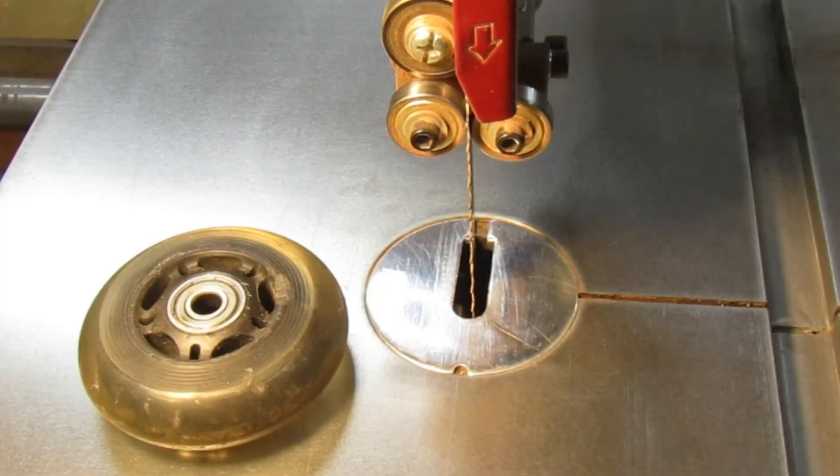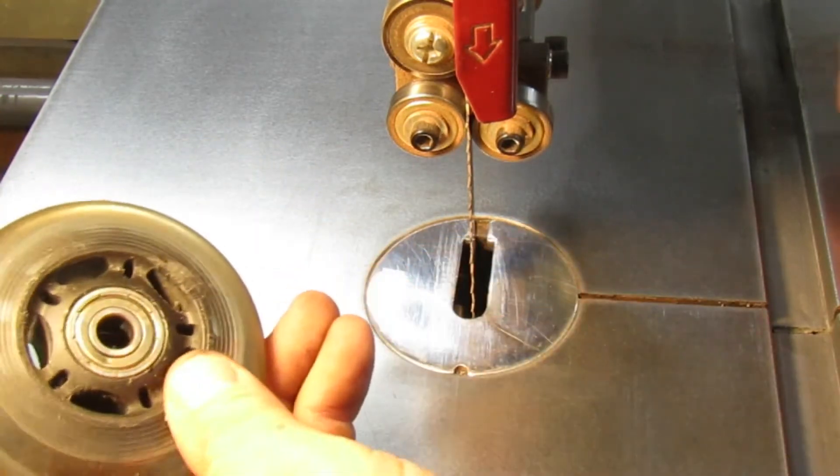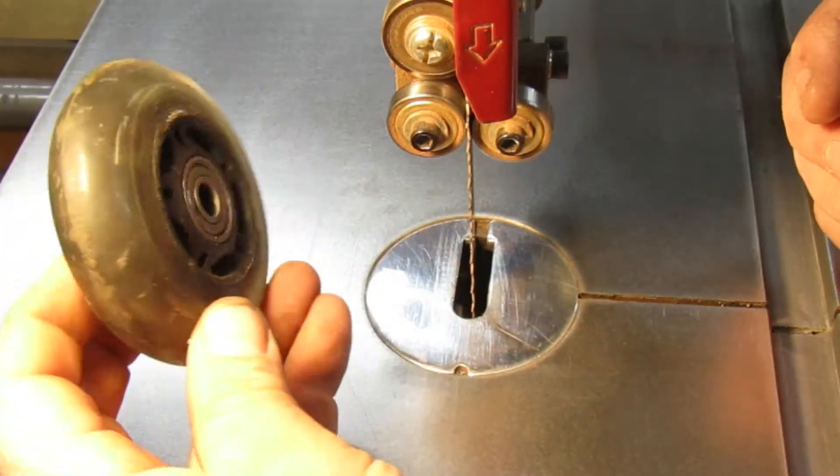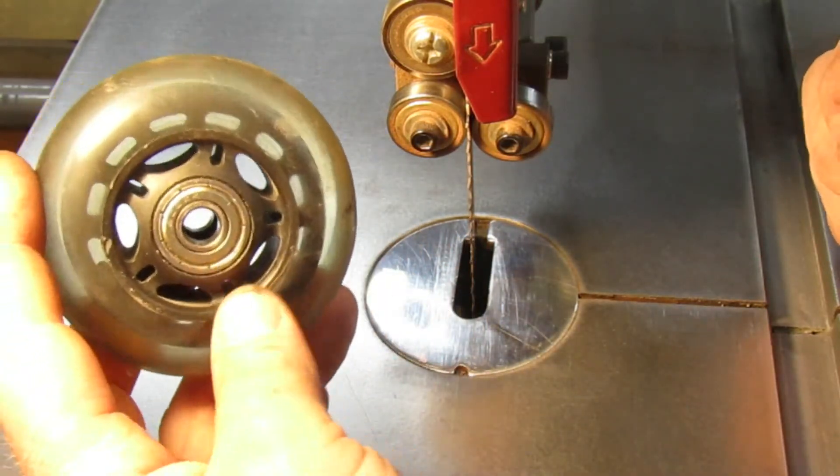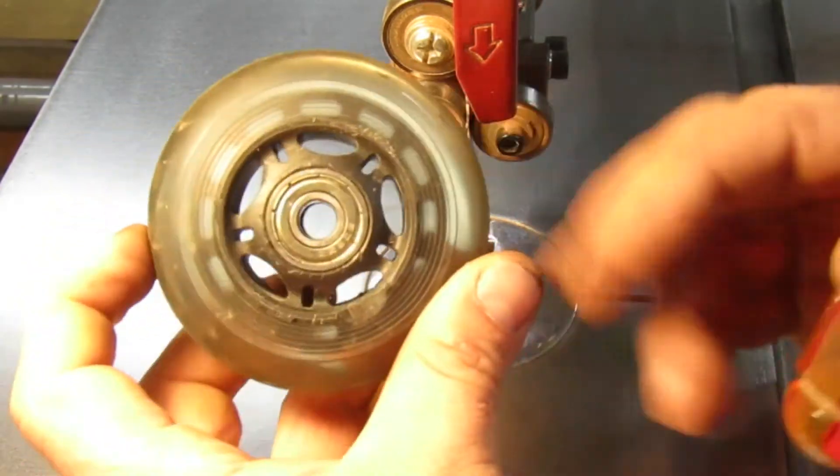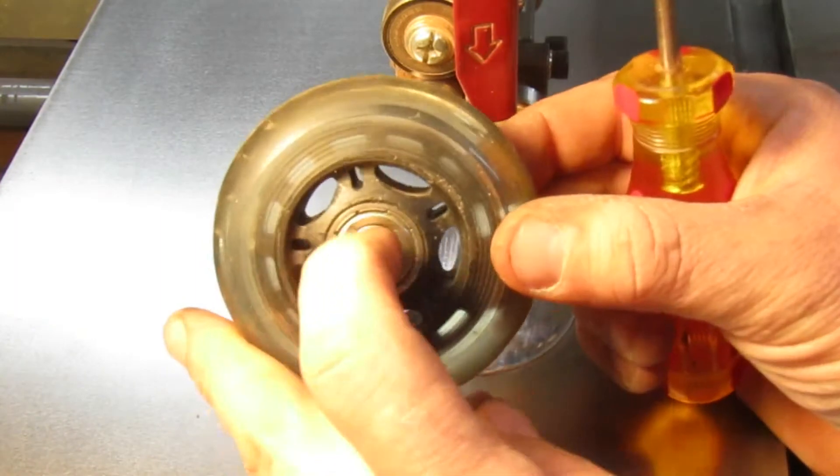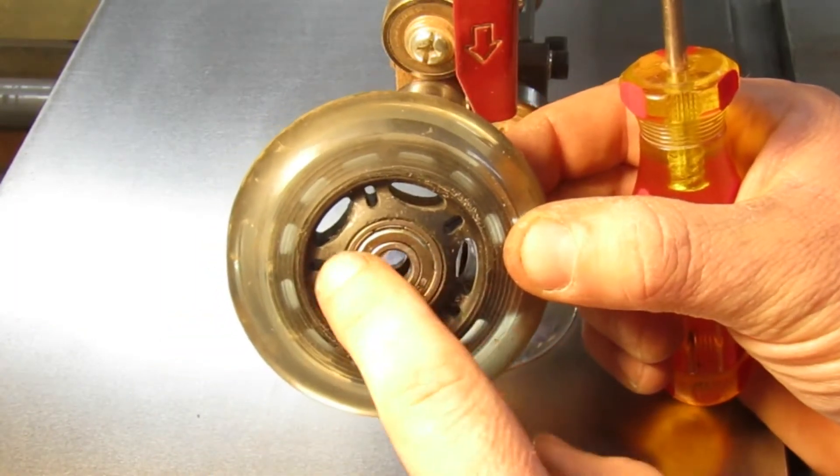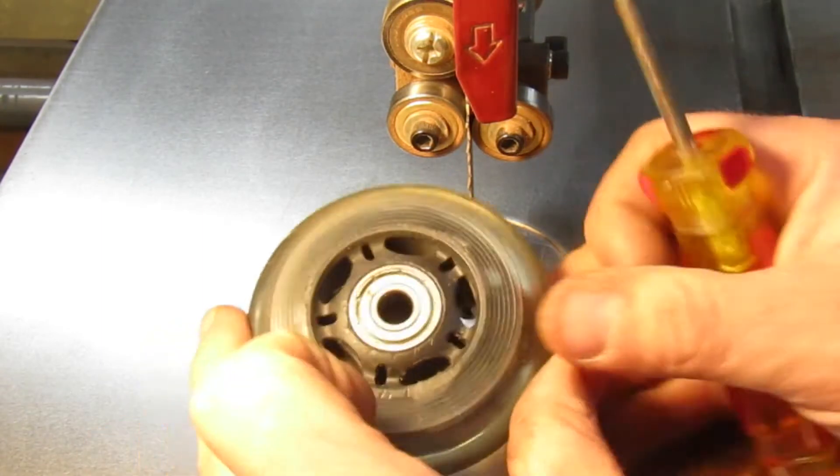Hello everybody, welcome back to my channel. If you own a bandsaw, you should be buying rollerblades from any kind of yard sale that you can find, or these came from an old office chair that had roller wheels on it. This bearing right here is the same bearing as these bearings right here.